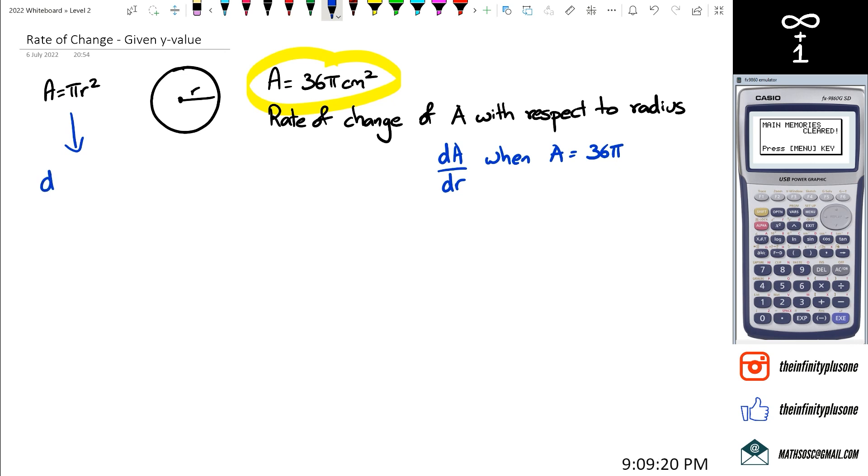So when we differentiate it, we're going to get dA dr. Pi r squared, when you differentiate it, you're going to end up with 2 pi r, all right? Now, as you guys can see here, the only thing that we can actually substitute in this equation is r.